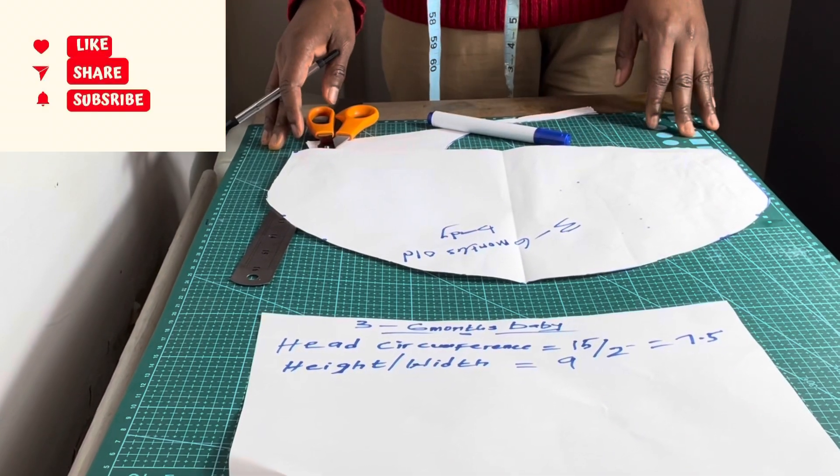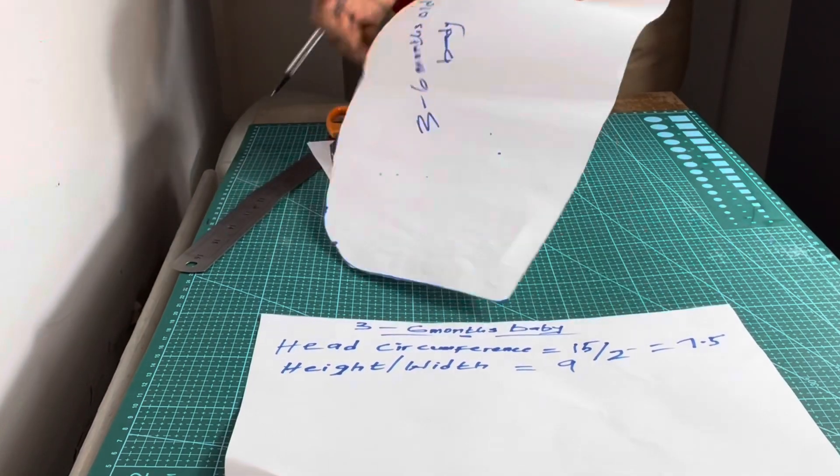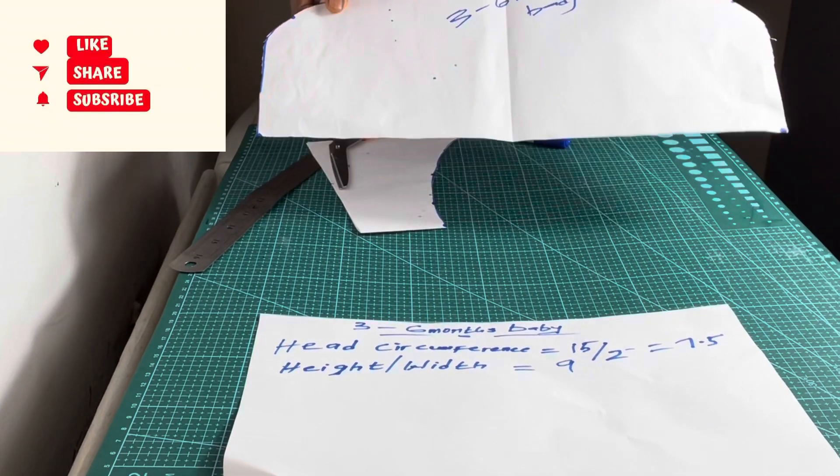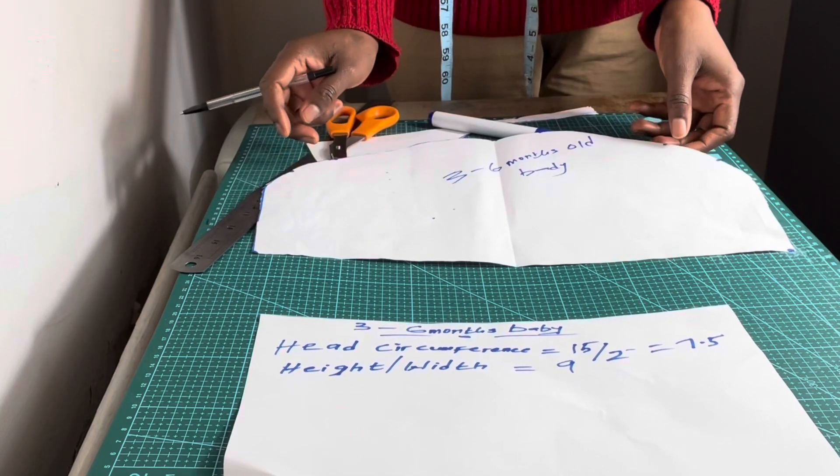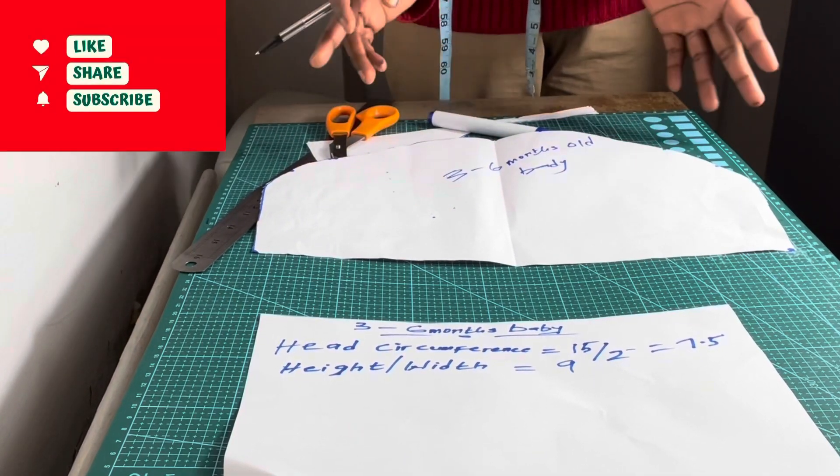That's pretty much how to draft a pattern for a three to six month old baby. Now all you need to do is get your fabric, place your pattern on your fabric, then you cut and you start working.